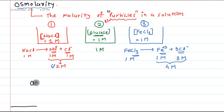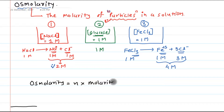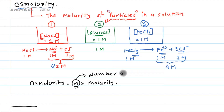We can put up the equation for osmolarity: osmolarity is equal to n times molarity (n × M). Here, n is the number of ions produced per molecule.